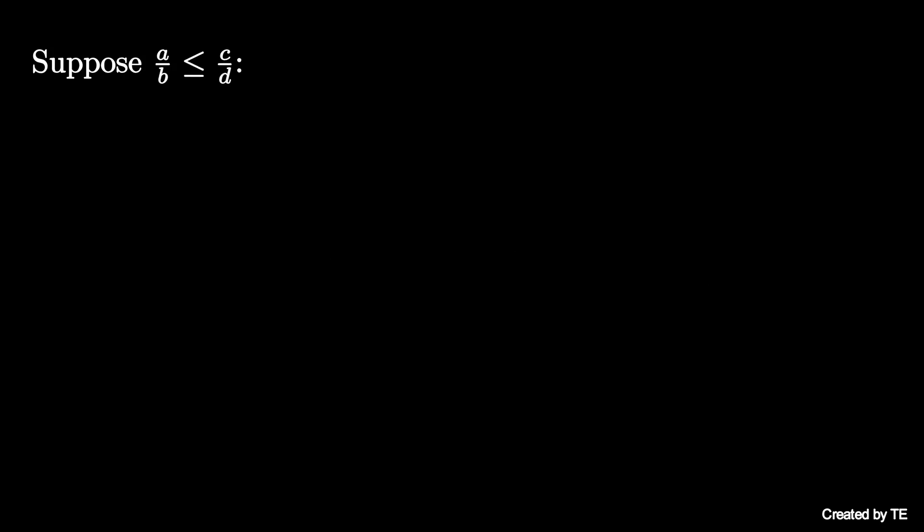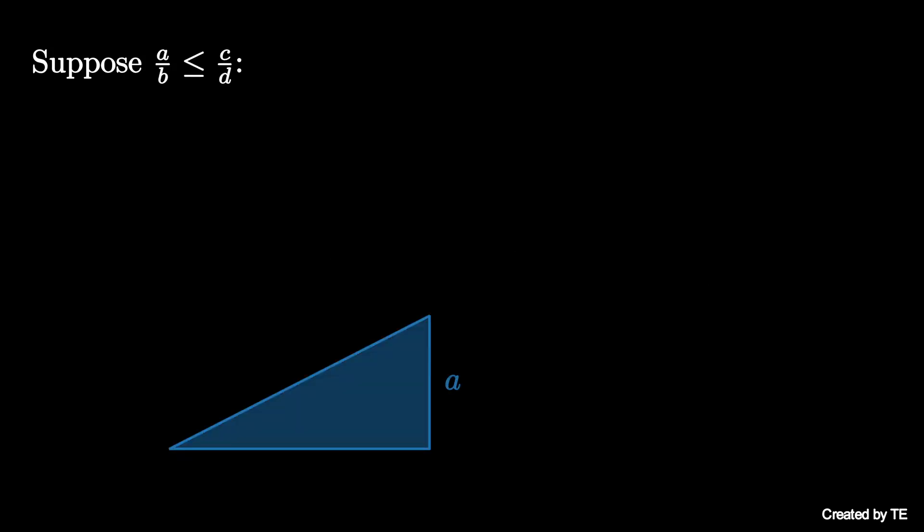Suppose the fraction A over B is less than or equal to the fraction C over D. Both of these fractions can be represented by the slopes of hypotenuses of right triangles,